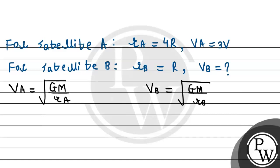Now dividing both equations, we get V_B by V_A equals square root of GM divided by R_B over GM divided by R_A. This simplifies to square root of R_A by R_B. Therefore, the velocity of satellite B equals velocity of satellite A times square root of R_A divided by R_B.